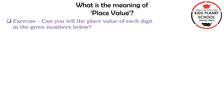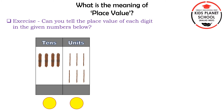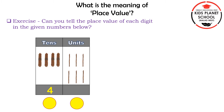Exercise. Can you tell the place value of each digit in the given numbers below? Children, here is a table of tens and units. By looking at the pictures, we have to write the numbers and also their place value. Let us count how many bundles of 10s there are: 1, 2, 3, 4 — there are 4 bundles of 10s. Now let us count the units: 1, 2, 3, 4, 5, 6 — there are 6 units.